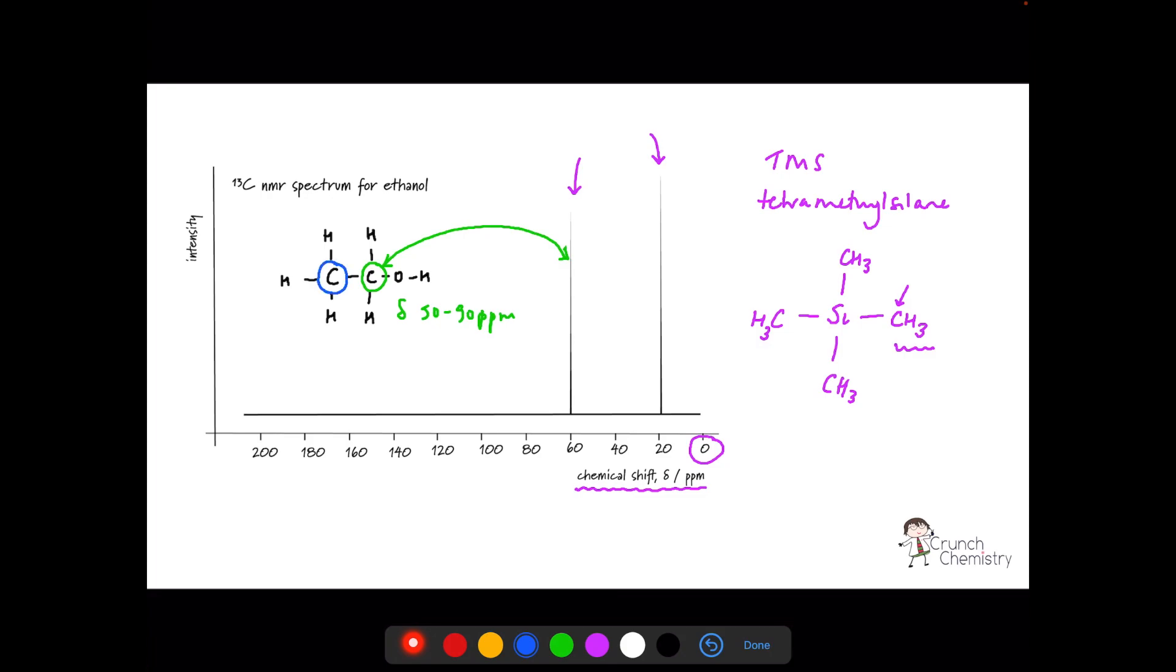This carbon atom here is not bonded to another oxygen. It's bonded to a carbon. And on the data sheet, the chemical shift for the signal would be expected to be in the range of 0 to 50 parts per million. So this signal or peak here on the spectrum must be due to the presence of that particular carbon atom.